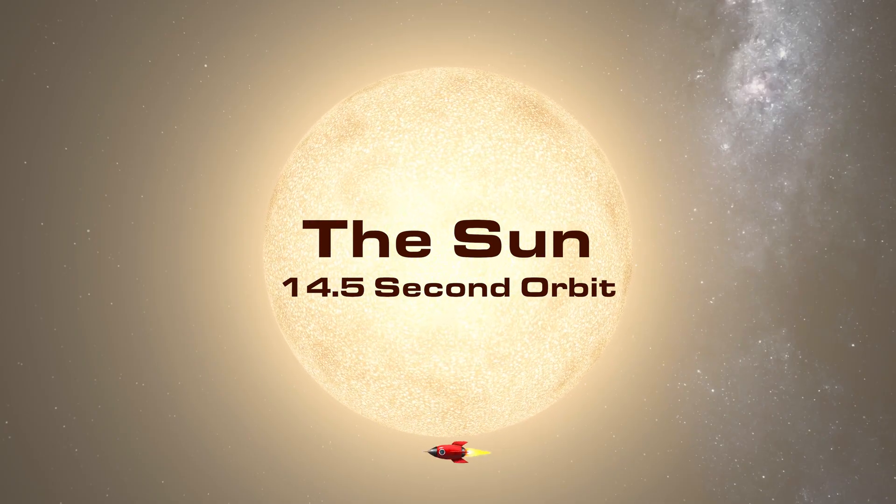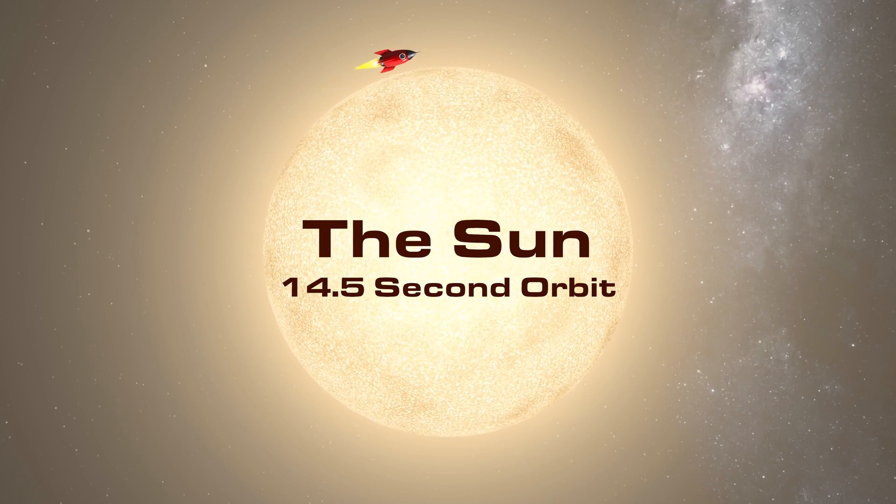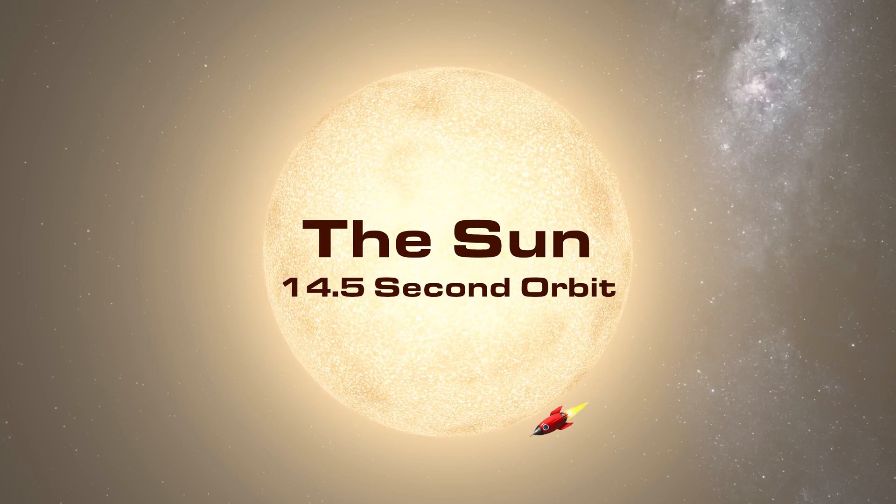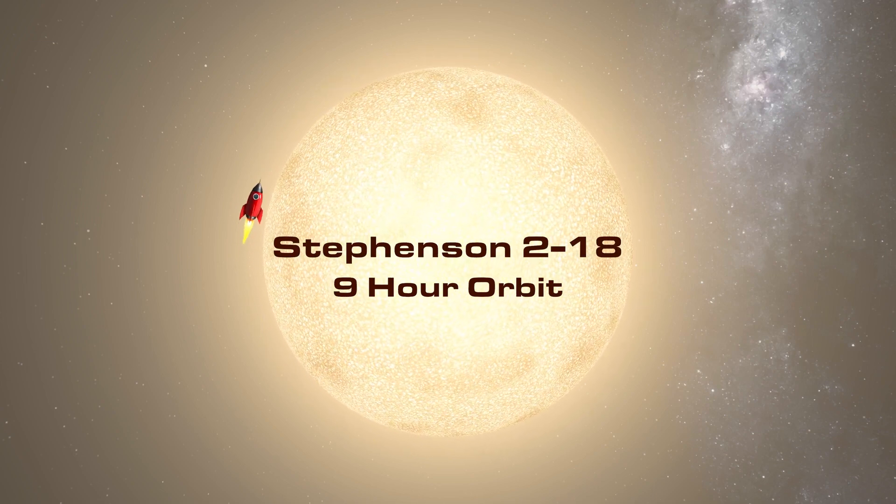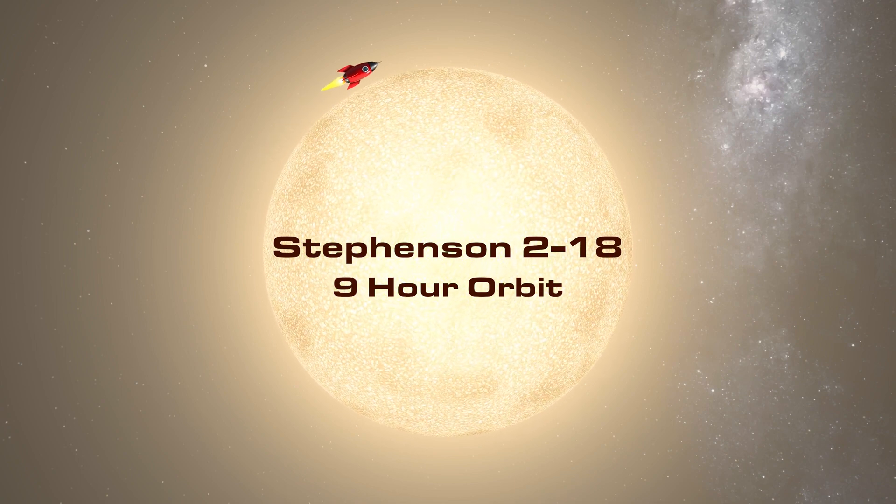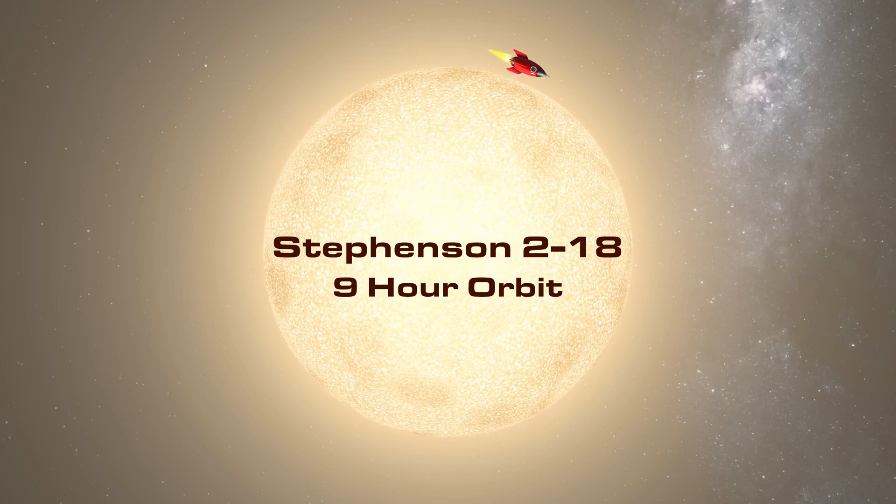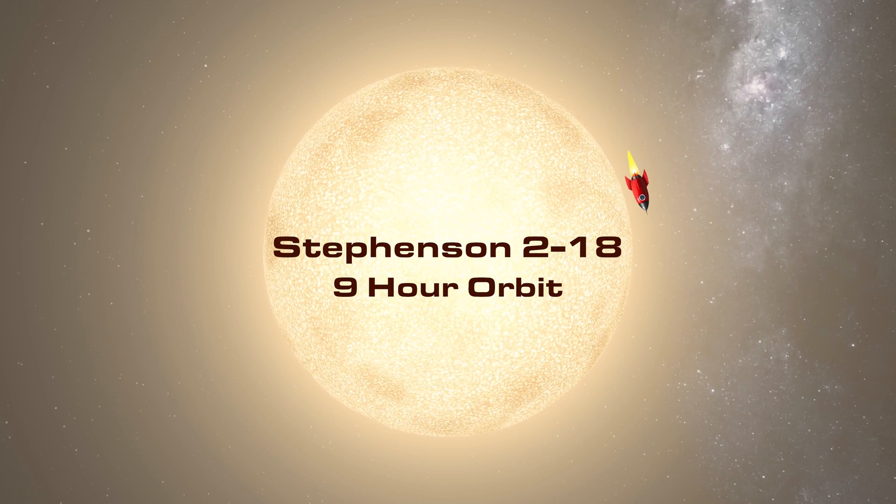This is absolutely massive and kind of hard to comprehend. To provide some perspective, if you circumnavigated the Sun's equator at the speed of light, it would take you 14.5 seconds to make a full orbit. On the other hand, if you were to circumnavigate Stevenson 2-18 at the speed of light, it would take you almost nine hours.